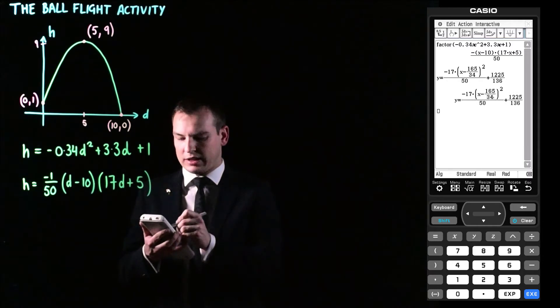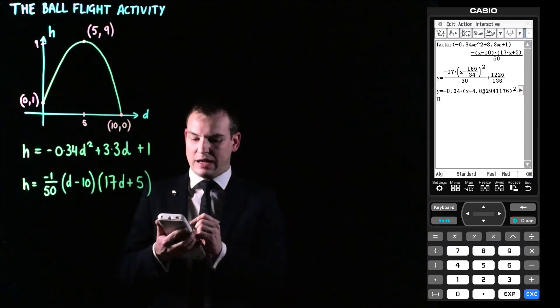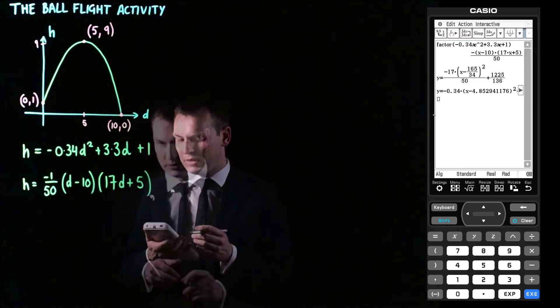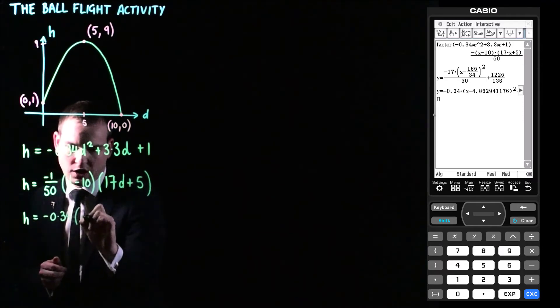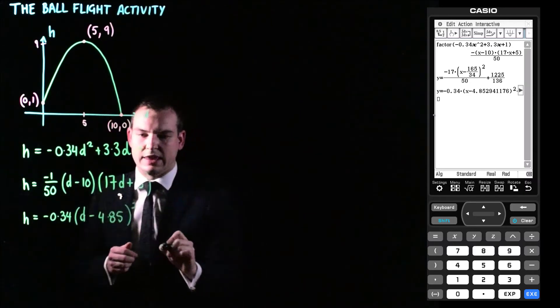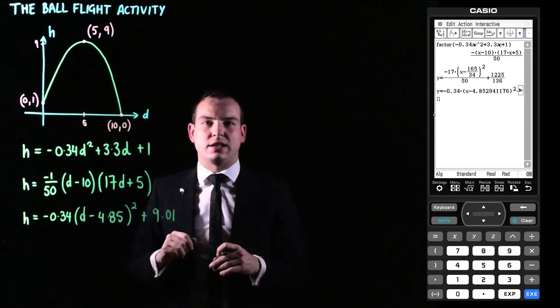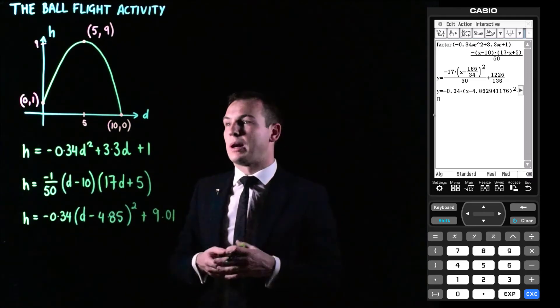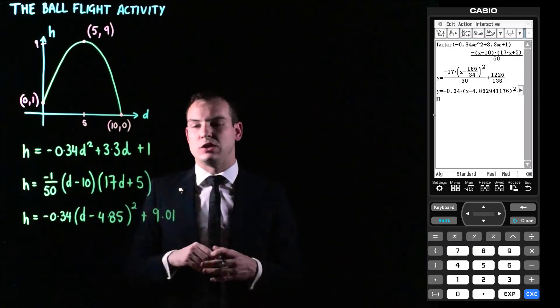And then hitting execute, I can tap on that and turn it to a decimal. So we get Y equals negative 0.34 times X take away 4.85 all squared plus 9.01 if we did this to two decimal places, which is a suitable way to do it. So finally, our turning point form, which is H is equal to, and it's going to be negative 0.34 times D subtract 4.85. And we're just doing two decimal places here, squared. And then we had plus 9.01. And that's going to be that turning point form of this particular situation or parabola. So that's how we can use our calculator to perform a quadratic regression, which finds the equation of that parabola for us. And we've now got it in all three forms. We've got it in general form. We have it in factorized form. And we also found it in turning point form.